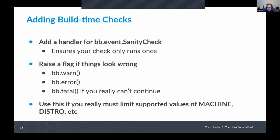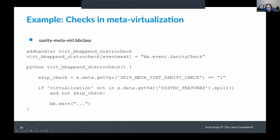Another thing I want to cover is adding build time checks to your layer. If you really need to limit your layer to only building for a particular machine or distro, don't just assume those variables are set to what you want. You can add a build time check that will give a warning, an error, or even a fatal error if your layer can't handle certain values. An example is the meta-virtualization layer, which has a check to see whether the virtualization distro feature has been enabled. If you haven't enabled the distro feature or set the skip variable to one, it will give you a warning to make sure you're aware that the meta-virtualization layer doesn't enable functionality unless you've set that distro feature.